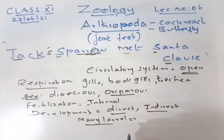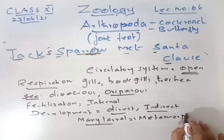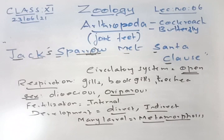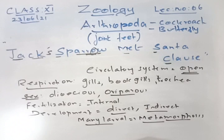This indirect development involves many larval stages, which is called metamorphosis. For example, the butterfly life cycle: egg → larva → pupa → cocoon → butterfly. So many developmental stages are present in this phylum.